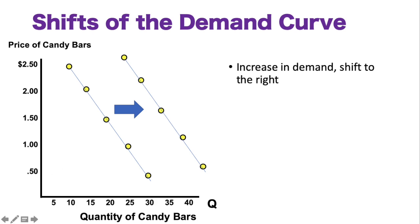If the price changes from $0.50 to $1, we're going to lose five purchases of candy bars. If demand itself changes — there are different shifters for demand — we can see that if demand increases, we get a complete shift of the curve to the right. An increase shifts to the right, and a decrease is a shift to the left.